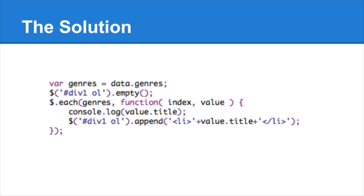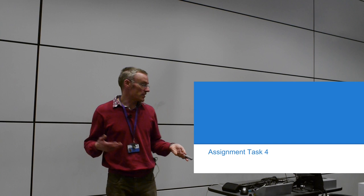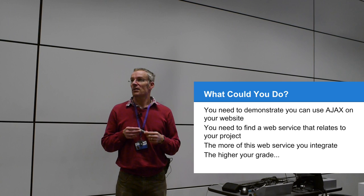Before going into the loop, I call `.empty()` to clear the list, then the loop regenerates it. It's so fast there's not even a flicker — you hit the button and it looks like nothing's happened, but it's refreshed the content. That's how you avoid it keep appending again and again. For assignment task four, you need to demonstrate you can use AJAX on your website. It's a playground — a sandpit for you to try things and achieve something.